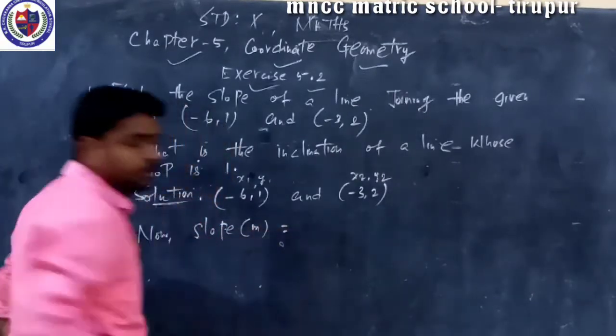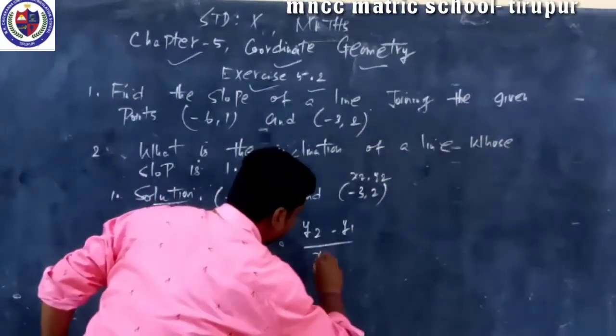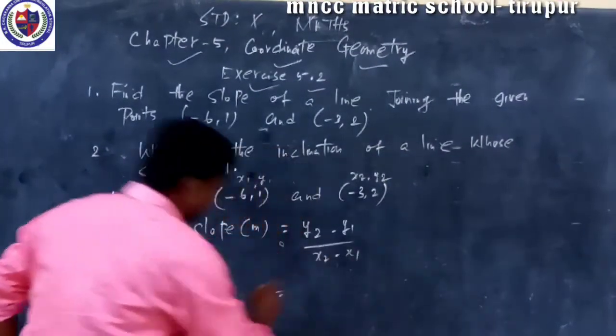M equal. Formula already wise: y2 minus y1 by x2 minus x1. Formula write.